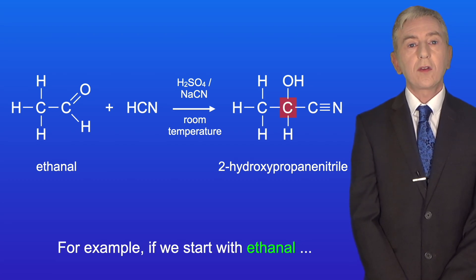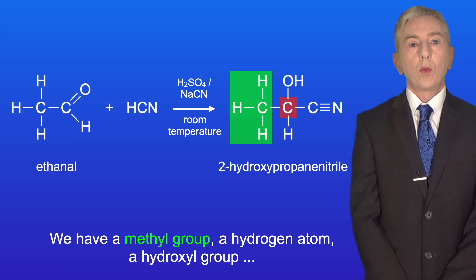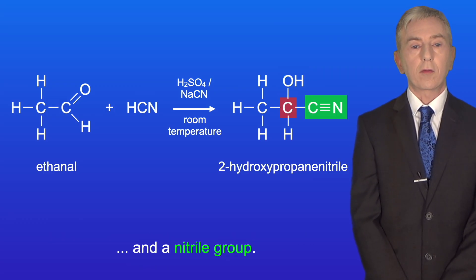For example, if we start with ethanal, then the product has four different groups bonded to the same carbon atom. We have a methyl group, a hydrogen atom, a hydroxyl group, and a nitrile group.